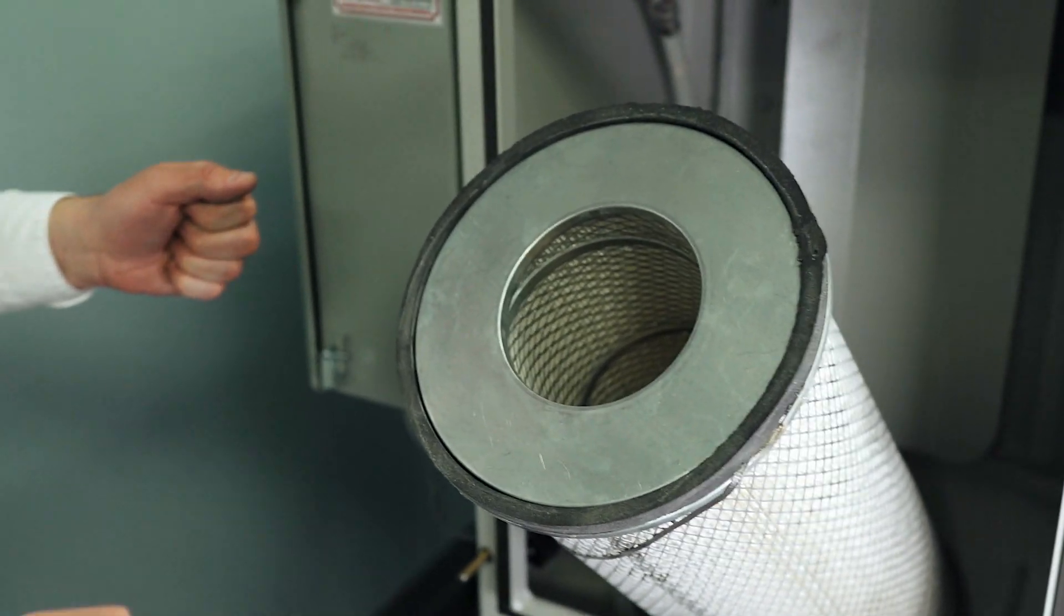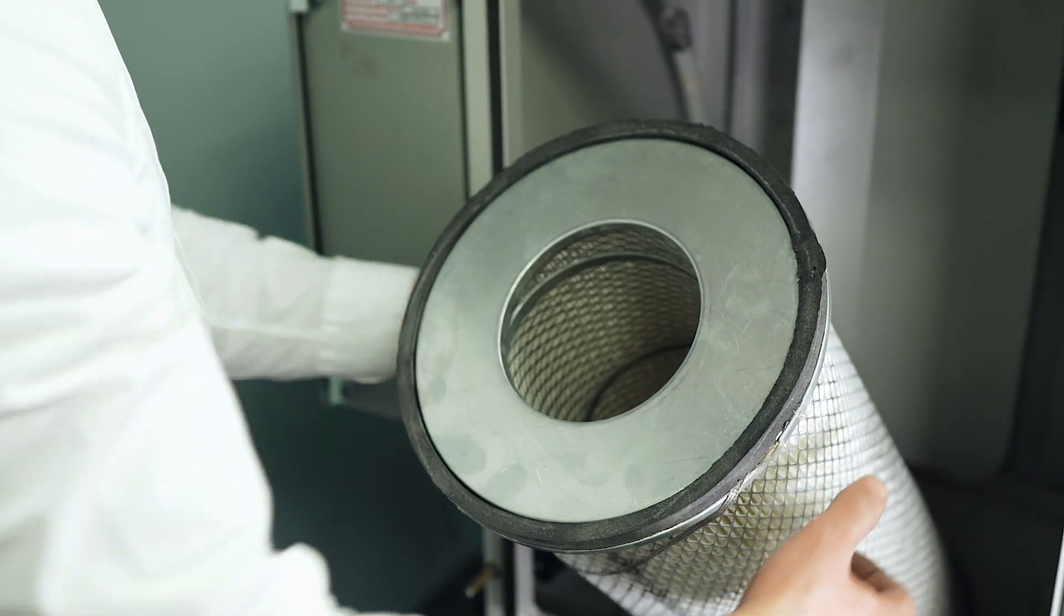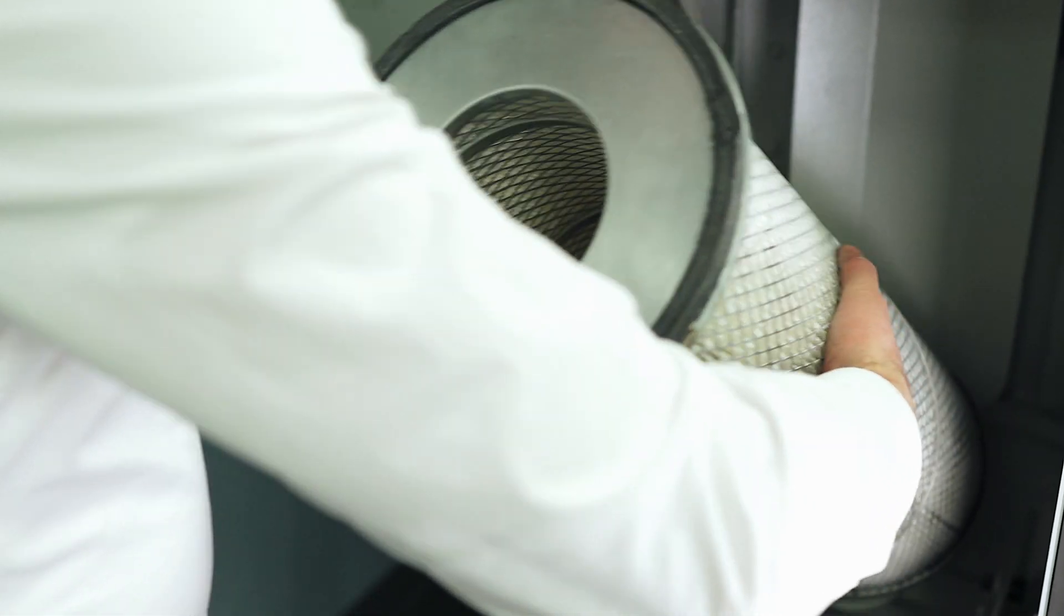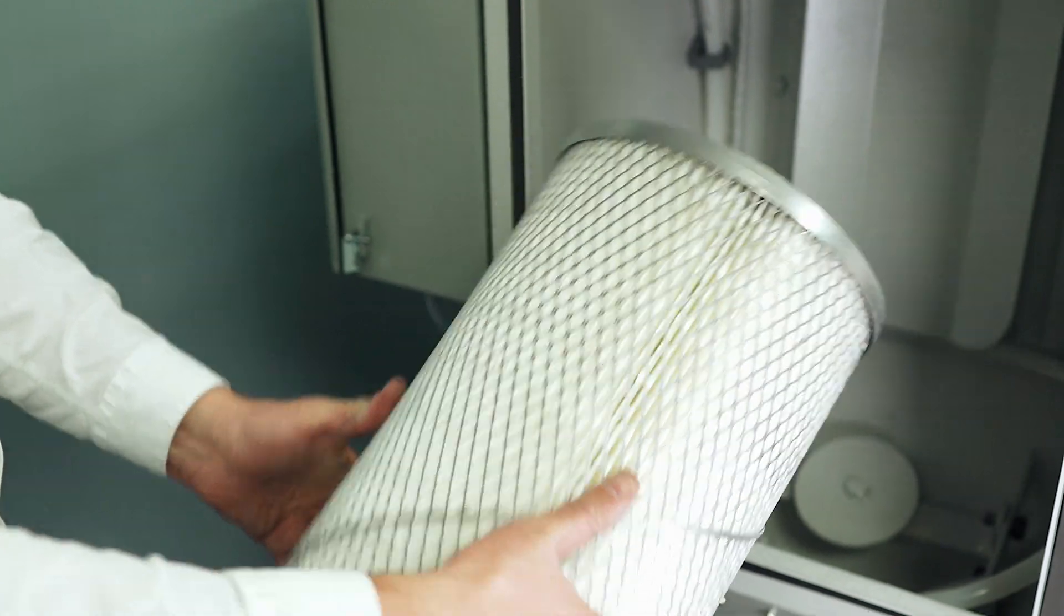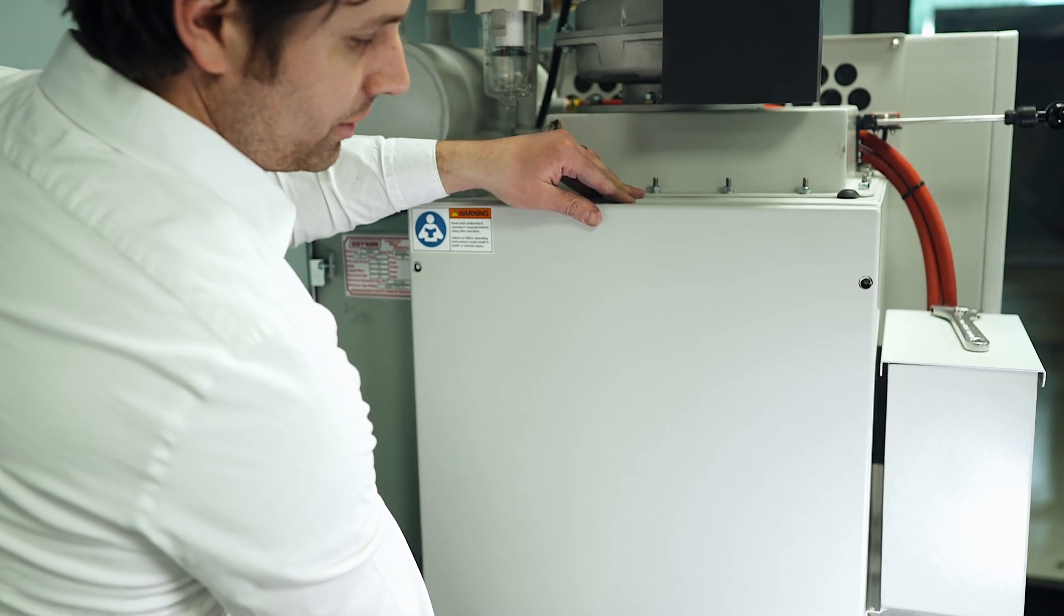For a really dirty filter, it's recommended that you place a bag over the filter as you're removing it and you tip it into the bag. Replace the door in the opposite fashion it was taken off.